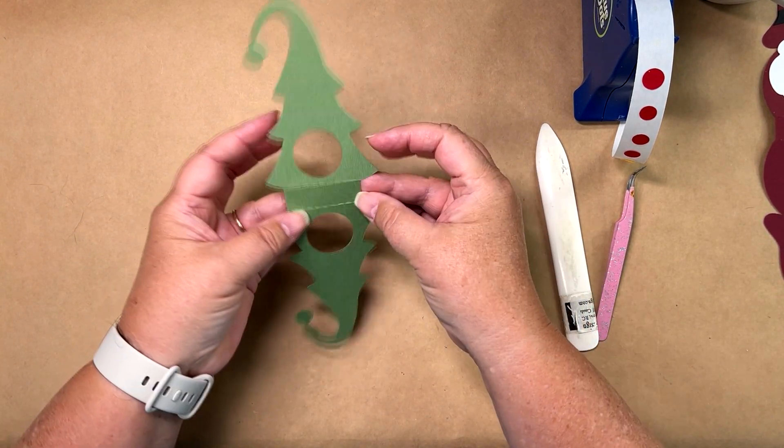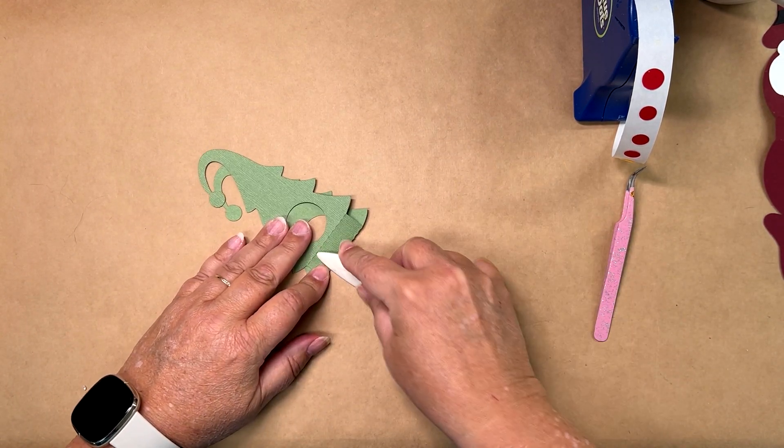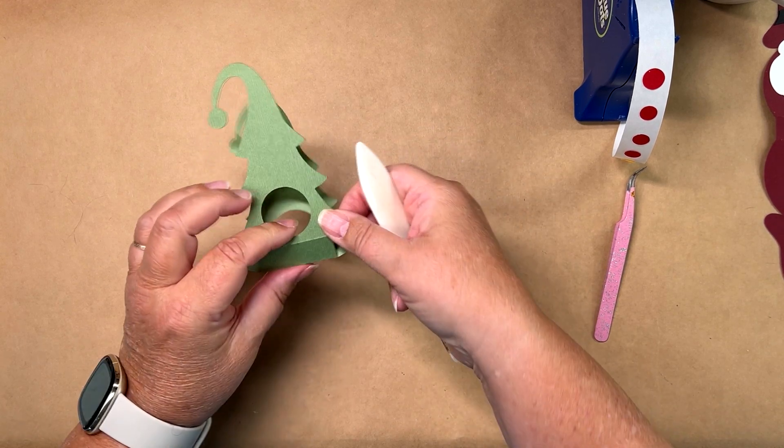Cut out the pieces first and then there's only two score lines so you're going to score them and you can just burnish them down with a bone folder.